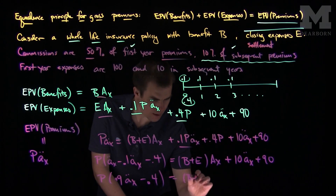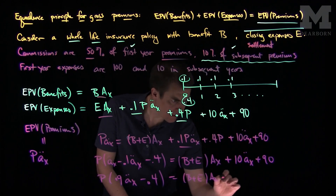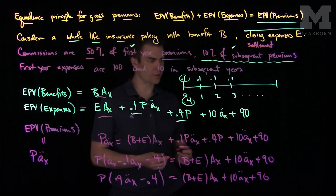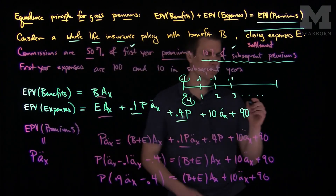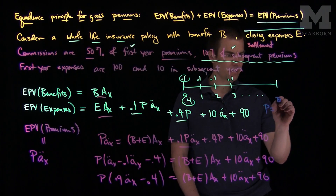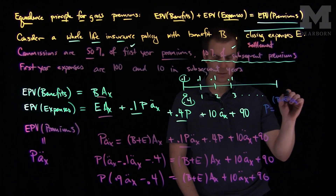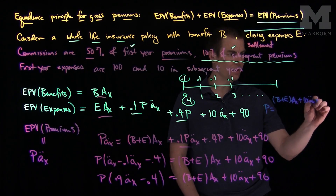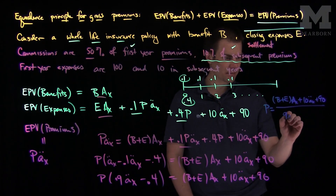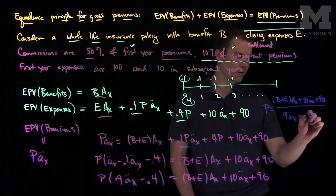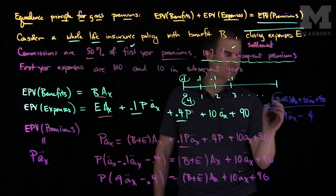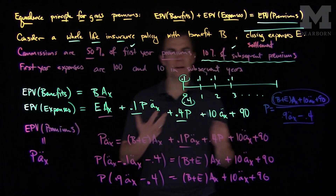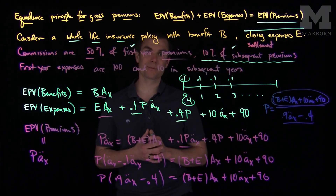Rearranging, we get P times ä_x minus 0.1 ä_x minus 0.4 equals B plus E times A_x plus 10 ä_x plus 90. Solving for P, we find that P equals B plus E times A_x plus 10 ä_x plus 90, all divided by 0.9 ä_x minus 0.4. The expenses are encapsulated on top, some on the bottom, and we have a fraction of the annuity minus a fixed amount. That is how we determine gross premiums using the equivalence principle. Thank you very much.